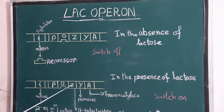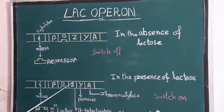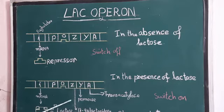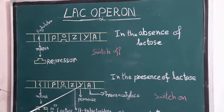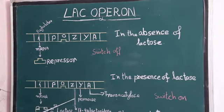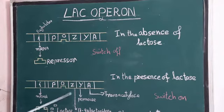There are three structural genes: Z, Y, and A. The product of the Z gene is beta-galactosidase, which is the actual enzyme that catalyzes the hydrolysis of lactose into glucose and galactose. The product of the Y gene is permease, which facilitates the uptake of lactose into the cell. The product of the A gene is transacetylase, whose exact function is not yet known, but it is supposed to help the complete breakdown of lactose into glucose and galactose.